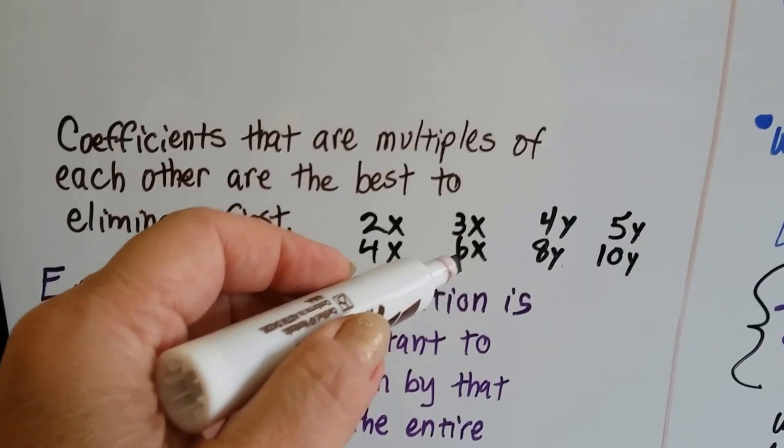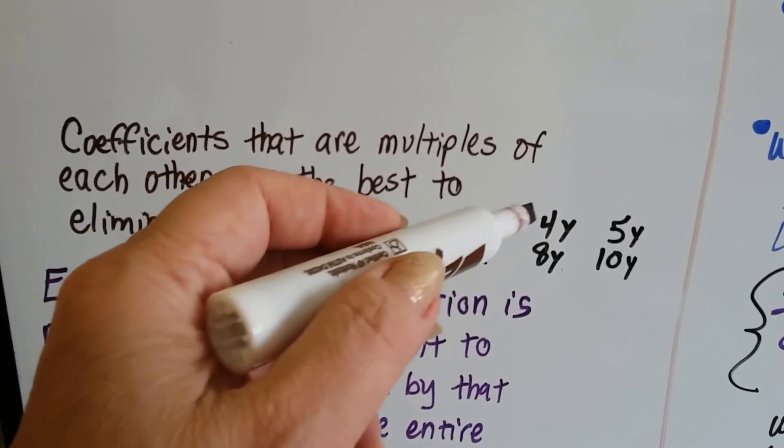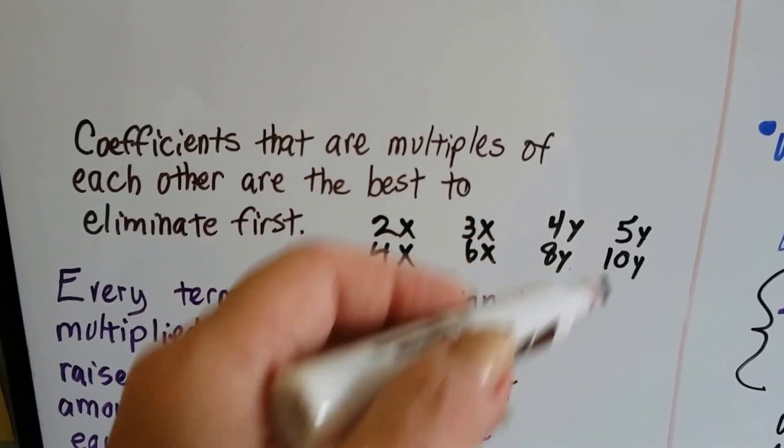Or a 3x and a 6x, multiply that 3x by 2. Or 4y and 8y, or 5y and 10y.